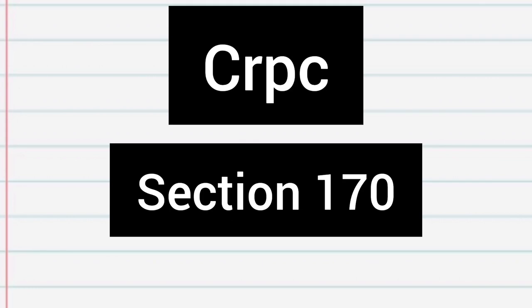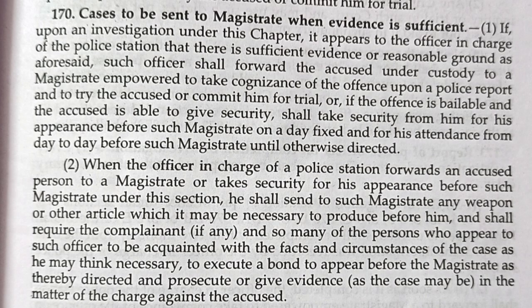Section 170 of CrPC — 'Cases to be sent to magistrate when evidence is sufficient' — has 4 sub-clauses. Sub-clause 1: If upon an investigation under this chapter it appears to the officer in charge of the police station that there is sufficient evidence or reasonable ground, such officer shall forward the accused under custody to a magistrate empowered to take cognizance of the offense upon a police report.